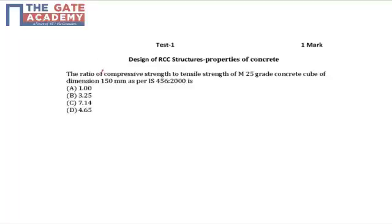of dimension 150 mm? Since the dimension is mentioned as 150 mm, as per IS 456-2000, the compressive strength will be the characteristic strength or fck, that is 25 N per mm squared. And as per IS 456-2000,